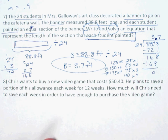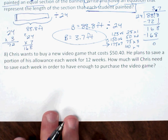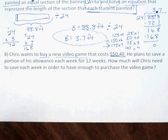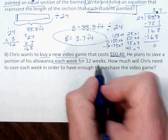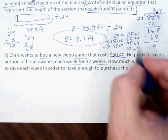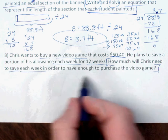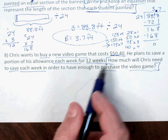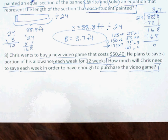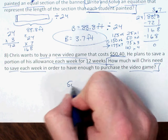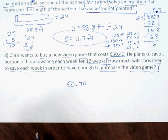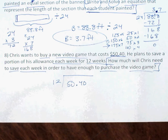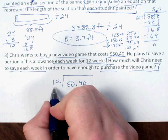Last problem, number eight. Chris wants to buy a new video game that costs $50.40. He plans to save a portion of his allowance each week for 12 weeks. How much will Chris need to save each week in order to have enough to purchase the video game? I know the game costs $50.40 and he's saving for 12 weeks, so I divide $50.40 by 12.